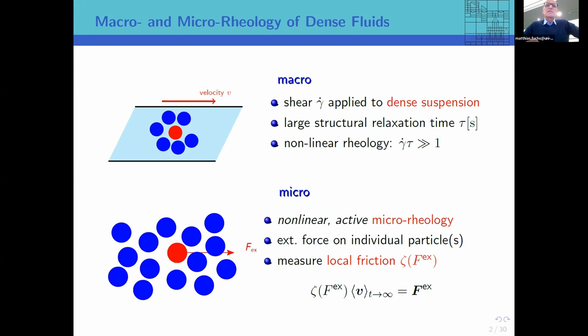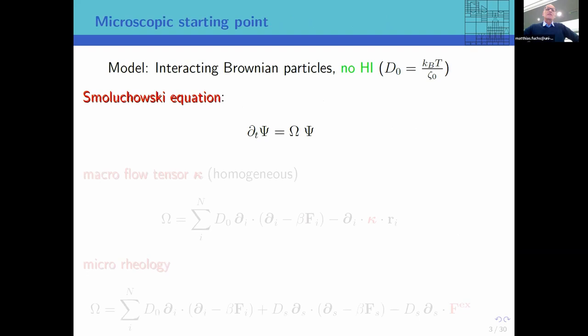These are the two cases I already mentioned: macroscopic rheology and micro-rheology, for example applying shear rate — always looking at dense suspensions. Hard colloidal particles will be what I'm thinking of. In rheology, if the shear rate compares to the inverse relaxation time, you get big effects — the Péclet number becomes large. In the micro-rheology experiment, I consider applying a fixed force on an individual particle in a dense dispersion, and the question is the local friction that this particle feels.